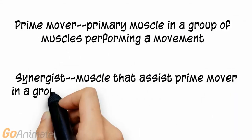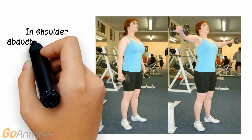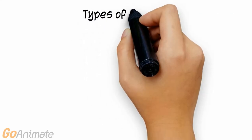Some other terms are prime mover and synergist. The prime mover is the primary muscle performing a movement. The synergist is a muscle that helps the prime mover perform a movement. Here's an example. In shoulder abduction, the deltoid performs most of the movement and the supraspinatus helps out. So we say the deltoid is the prime mover and the supraspinatus is a synergist.